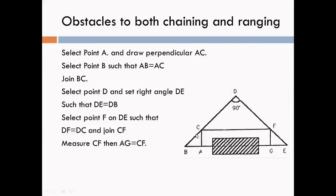From point C, join C to B such that the length of line AC equals the length of line AB, meaning triangle ABC is an equilateral triangle. From point C, join C to D and select point D on the ground. At point D, set 90 degrees using the optical square. Select point E such that the length of DE equals the length of DB. Select point F on line DE such that the length of DC equals the length of DF. Join C to F. The length of line CF equals the length of line AG. Measure the length of CF on the ground, so CF = AG.